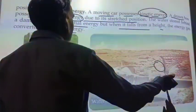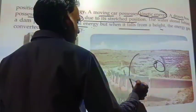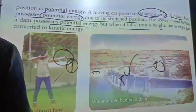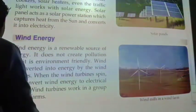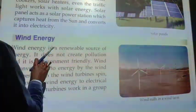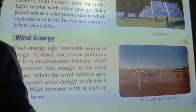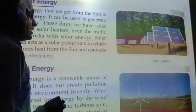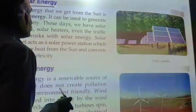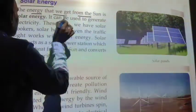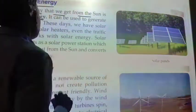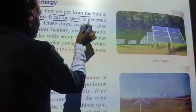So this is what we call the potential energy system, which includes kinetic energy. Together, this is what we call mechanical energy. Now we have our next type of energy — it is solar energy.